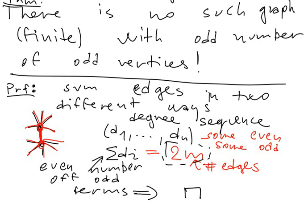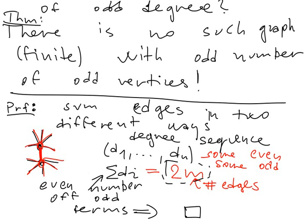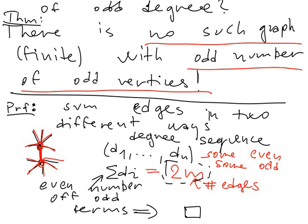Which concludes what we wanted to prove: there is no graph with an odd number of vertices of odd degree.